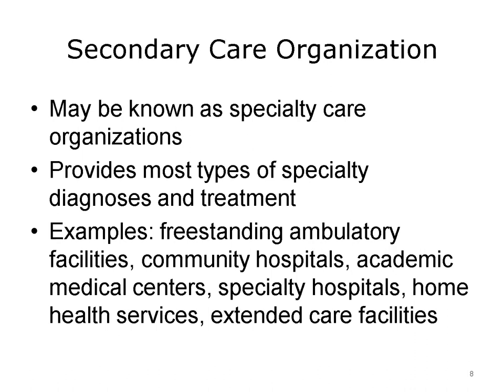Secondary care organizations represent more specialized care and are also called specialty care organizations. They can provide many types of specialty care, such as surgery, cardiology, physical medicine, and burn care. Examples of secondary care providers include ambulatory care facilities such as outpatient surgery centers and other freestanding ambulatory or rehabilitative facilities, community hospitals and academic hospitals, specialty hospitals such as cancer-focused hospitals, home care and hospice services, and extended care facilities such as nursing homes and skilled nursing facilities.